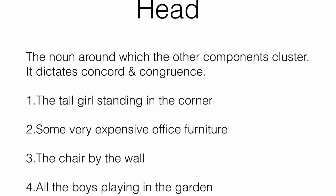The first part that we start with is the head. This is the noun around which the other components cluster. It dictates concord and congruence. So, for example, if you said 'the red car,' then you would say 'the red car is,' 'the red cars,' 'the red cars are.' Look at these four sentences. In each sentence, I want you to select just one word — the word that, if you were to point with your finger at something, would be it. That one word is the head.